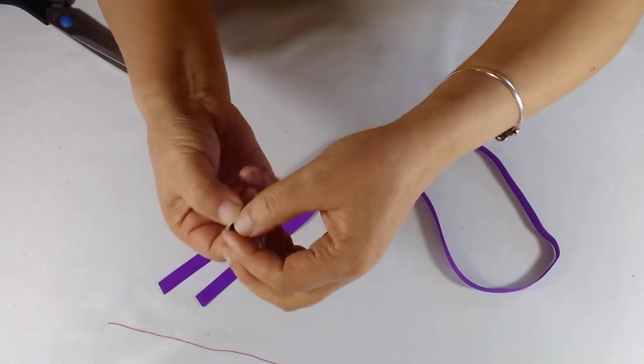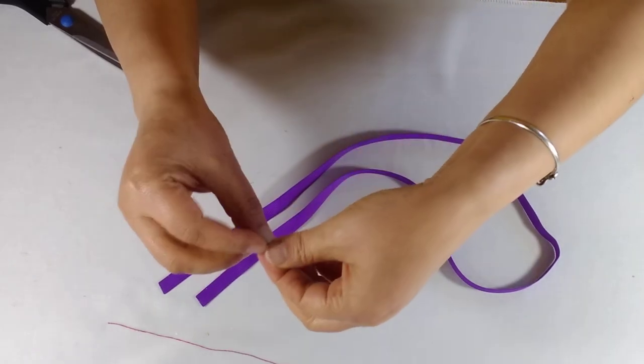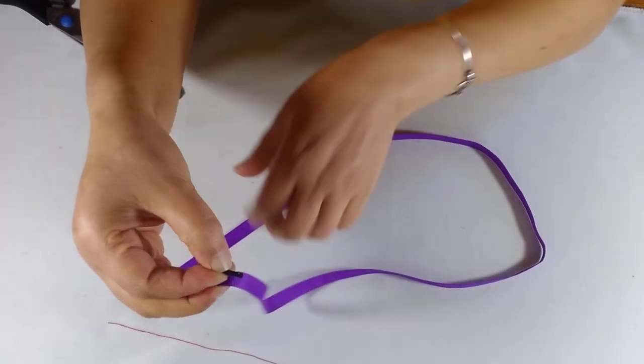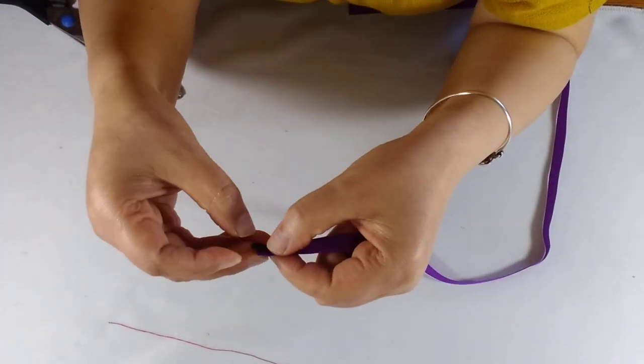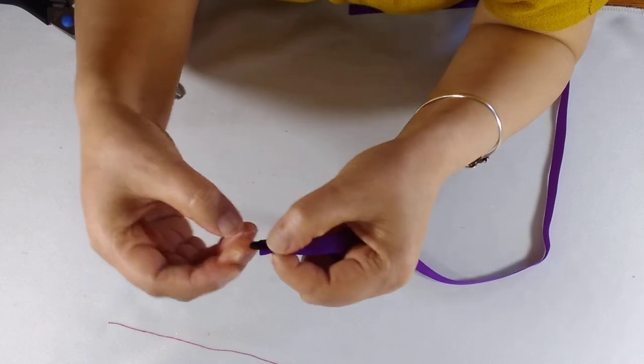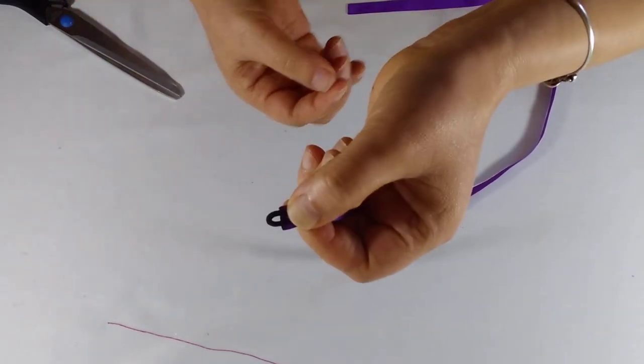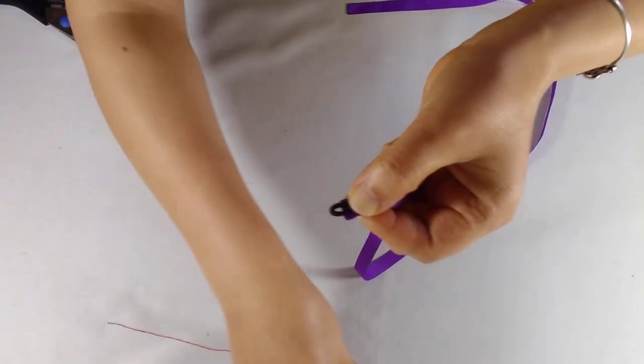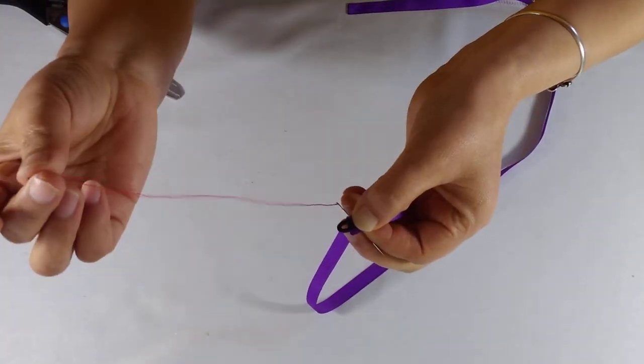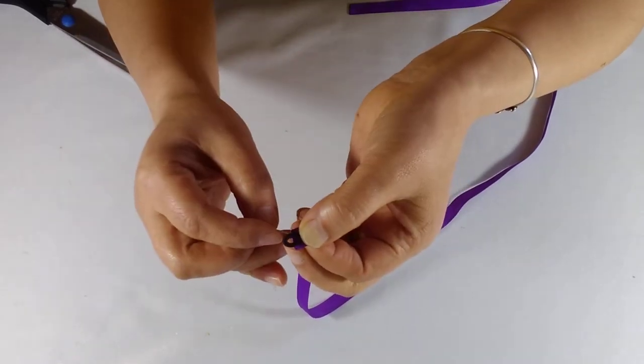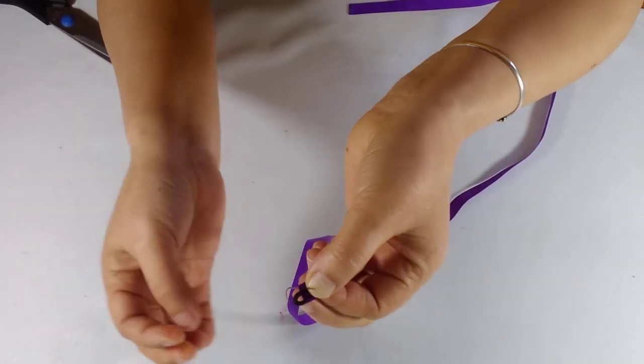So it's five millimeters on the top. Now it's quite easy. You leave that bit, about one, two, three, then you put a knot on the end.